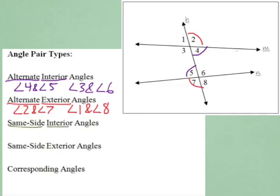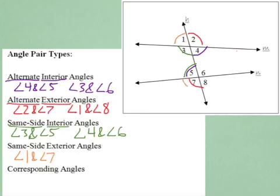Let's look at same side interior angles — angles on the same side and both interior. Which is the same side interior angle of angle three? That would be angle five. They're both on the left-hand side of transversal H and both between lines M and N. So angle three and angle five are same side interior angles; the other pair is angle four and angle six. For same side exterior angles, those would be angle one and angle seven, or angle two and angle eight — same side of the transversal and on the outside of the two lines.